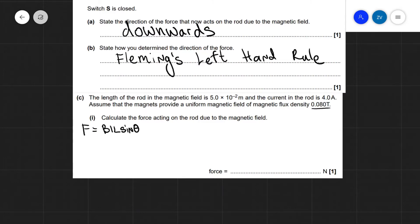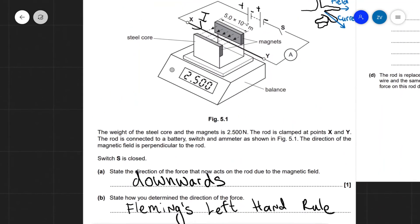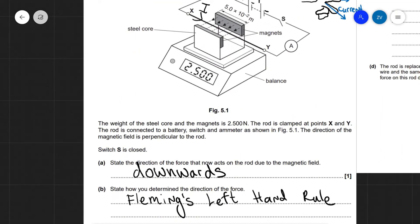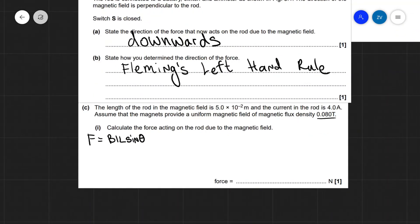So I'm just going to write F = BIL sin θ. Even better, because the field and the current are perpendicular, this would mean that the sine of 90 will equal 1. So the equation will just turn into F = BIL.